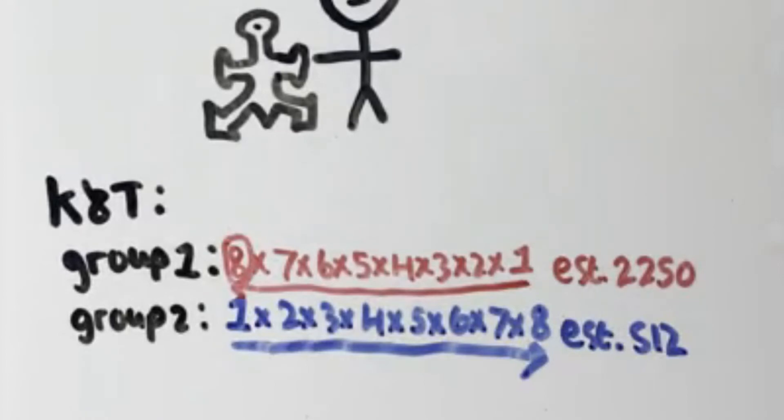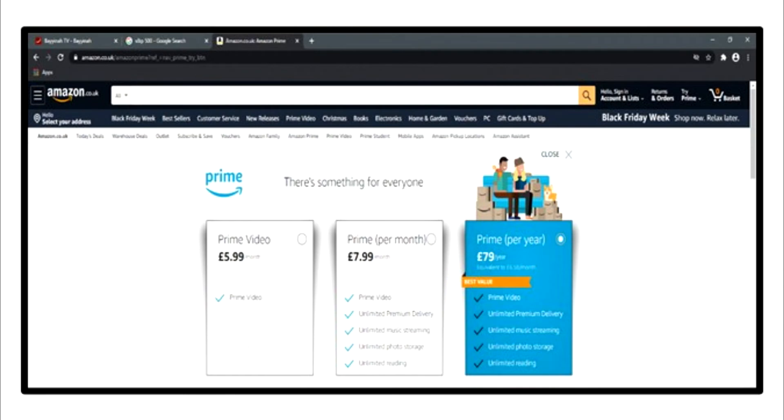The anchoring effect is of course not just confined to experiments. It's used widely in real life as well. Here's the current Amazon subscription packages. You can pay $5.99 for just Prime Video. Or for $7.99 you can also get unlimited delivery, music, photo storage and reading with it.